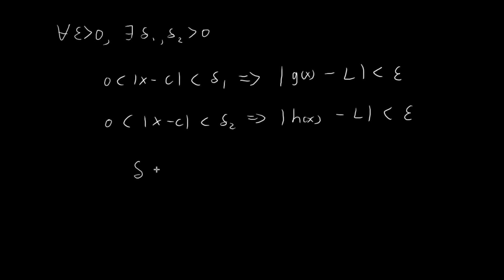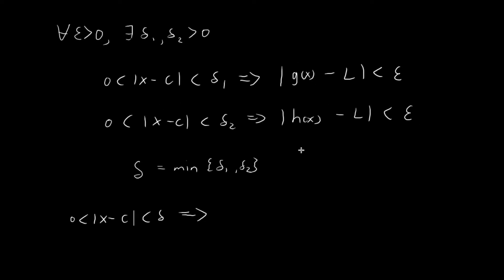Now I'm going to define a new symbol called δ equal to the minimum of δ₁ and δ₂. Since δ is the minimum of δ₁ and δ₂, I know that if x is a value such that |x − c| < δ, then both statements are immediately implied, because δ is the minimum of δ₁ and δ₂. So if x satisfies this condition, both of these are automatically satisfied and both statements will be automatically true.